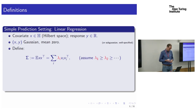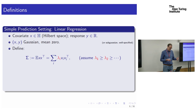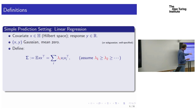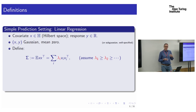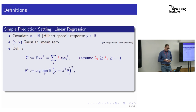There are three crucial pieces of notation. The first is the covariance of the X's — we express it as a spectral decomposition with eigenvalues lambda_i, the variance in the principal component directions. Lambda_1 is the biggest, lambda_2 the next biggest, and so on.